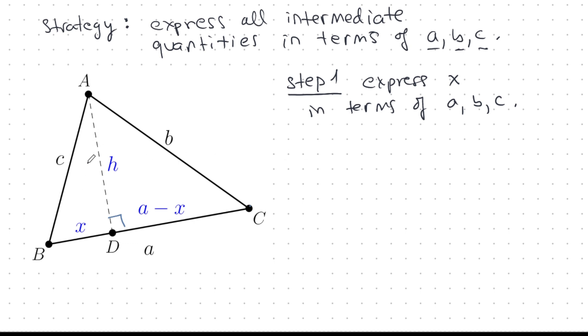There are two triangles, two right angle triangles inside the big triangle. Let's look at the smaller one, triangle ABD. And what does triangle ABD tell us? Well, C squared is X squared plus H squared. C squared is X squared plus H squared. We apply Pythagoras.